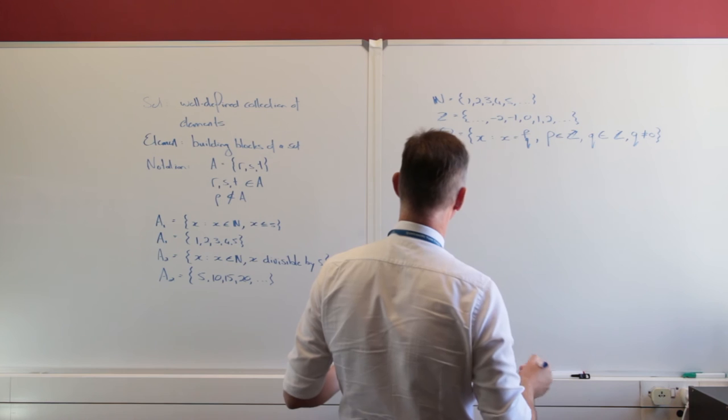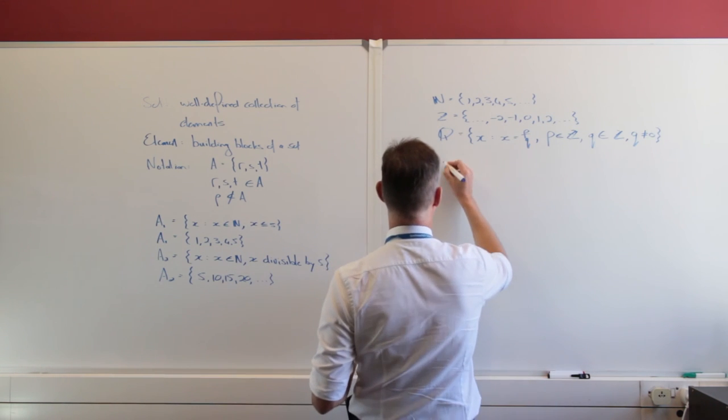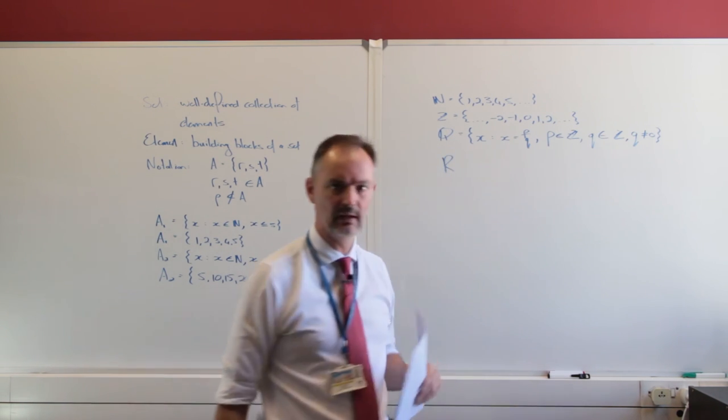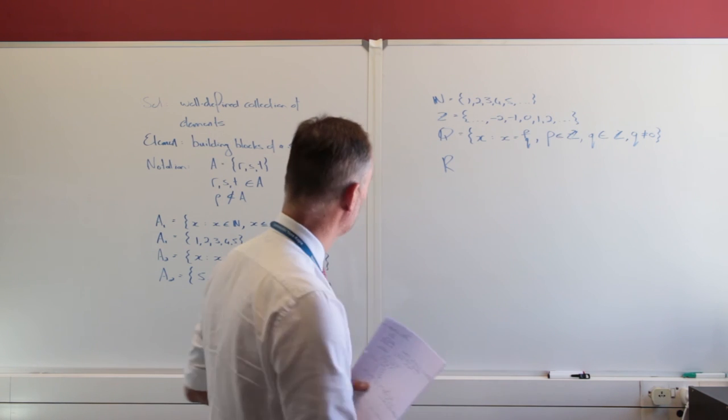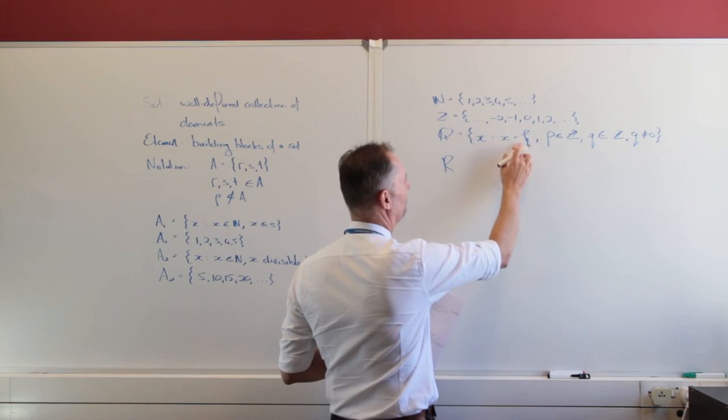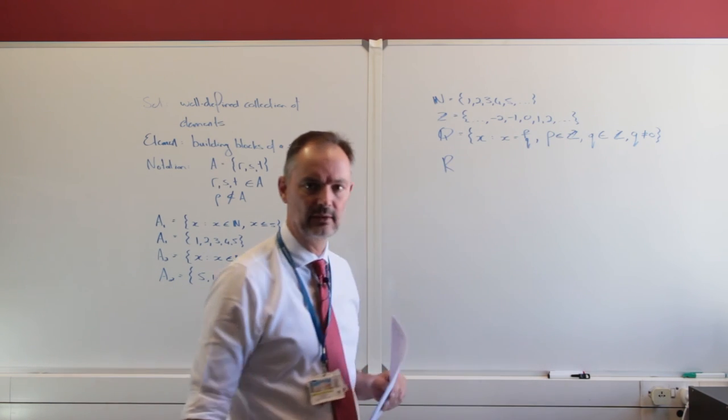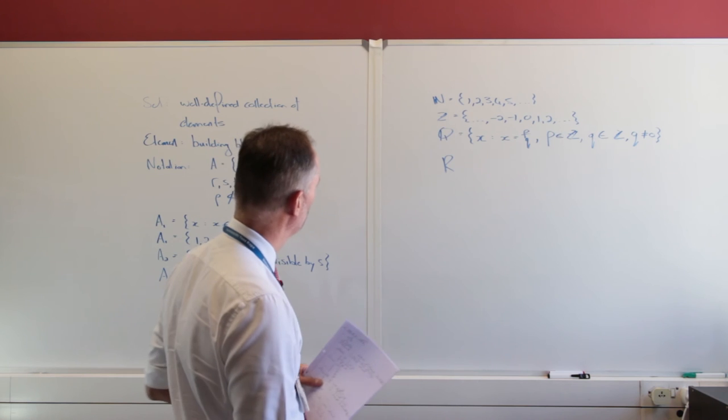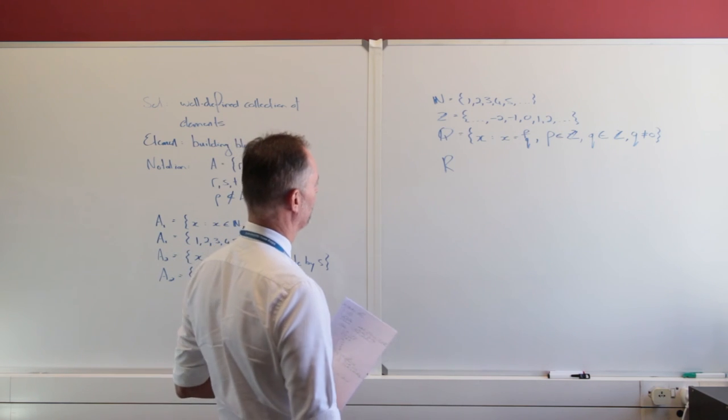And then of course we're going to have the real numbers, and that just falls on the real line, so all rational and irrational numbers. Remember, an irrational number cannot be expressed as the quotient of integers. So that's really what we're going to use in this course on abstract algebra.